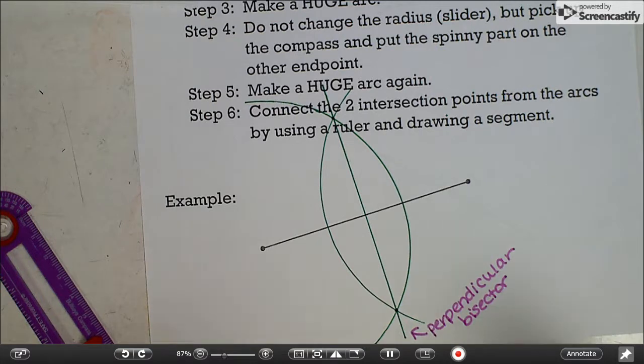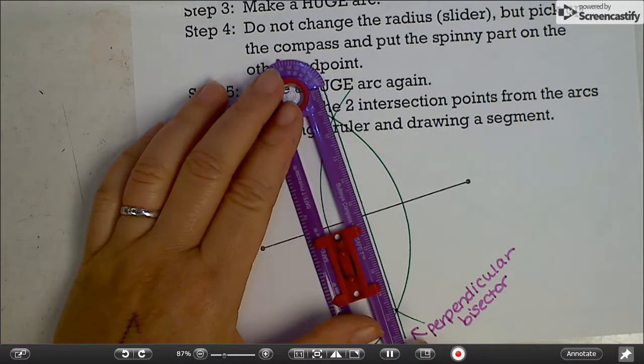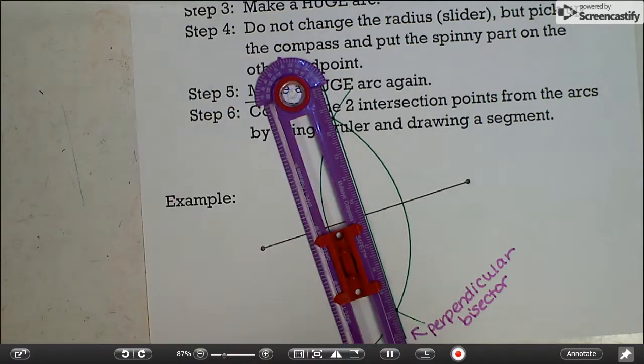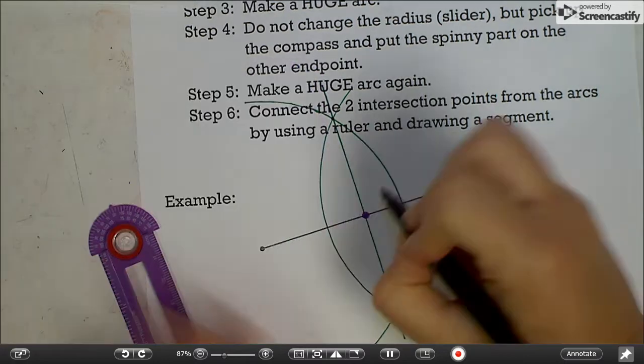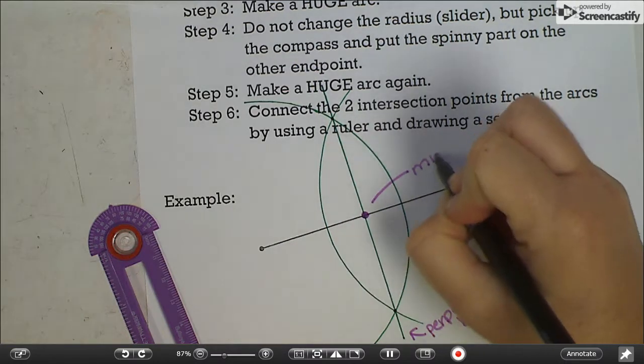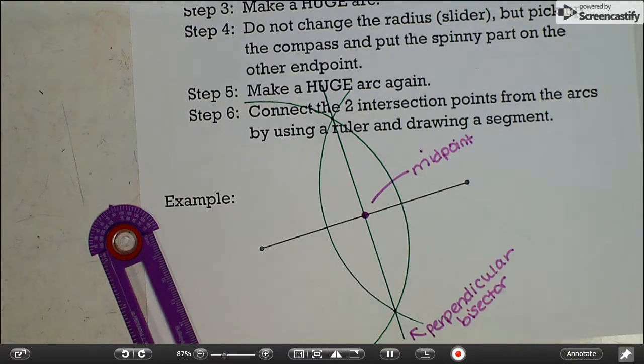If the direction said just draw the midpoint instead of drawing the line, you would put your compass or your ruler there, line up the point and then put a dot for the midpoint. That's the midpoint. You don't have to do both. It just will depend on what the instructions say.